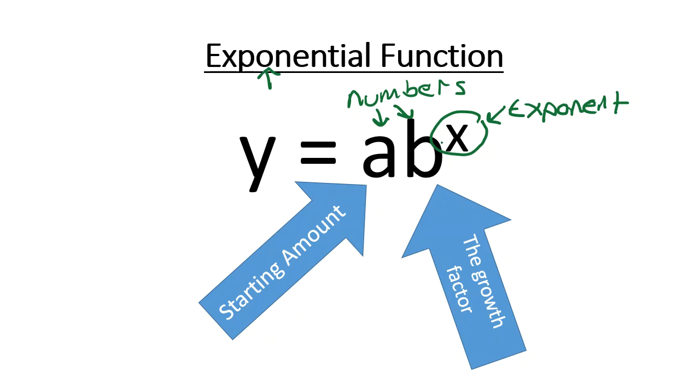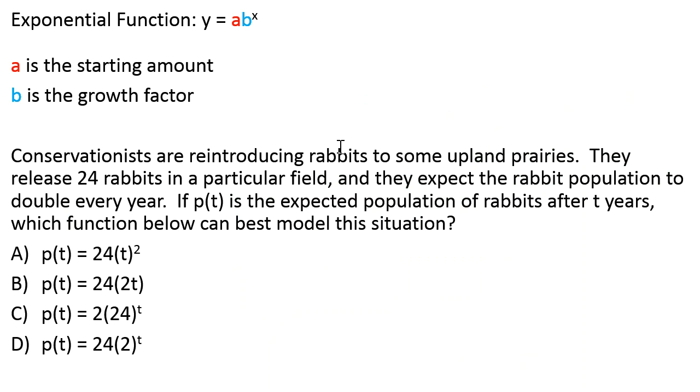Since we have x, a variable x is an exponent, it's going to be an exponential function. a is going to be our starting amount, and b is going to be our growth factor. Taking a look at our first example, our exponential functions, y equals a times b to the x. A is the starting amount, b is the growth factor, and we've got a situation.